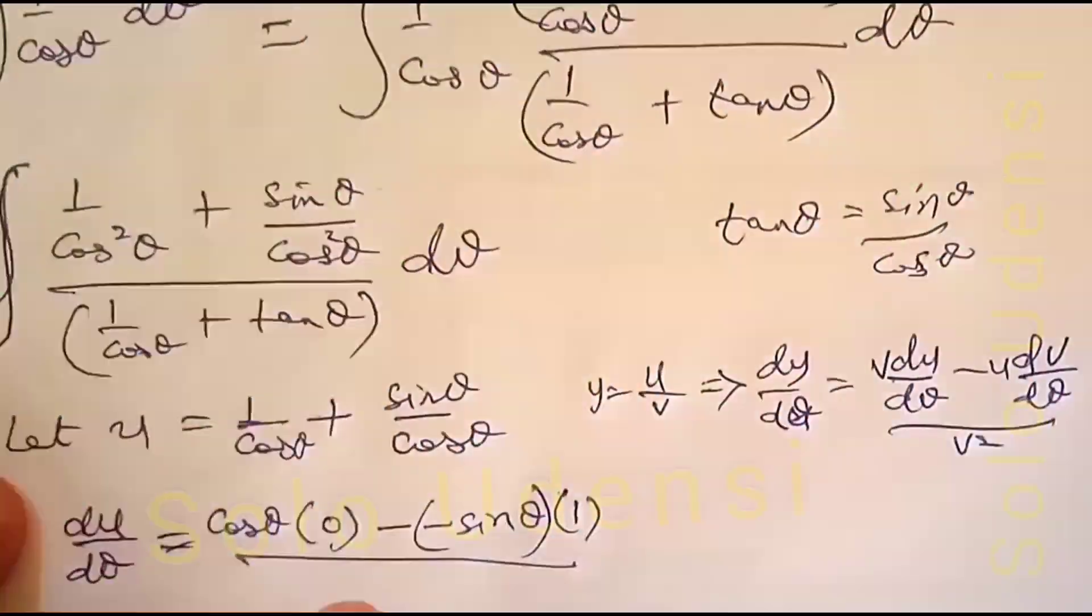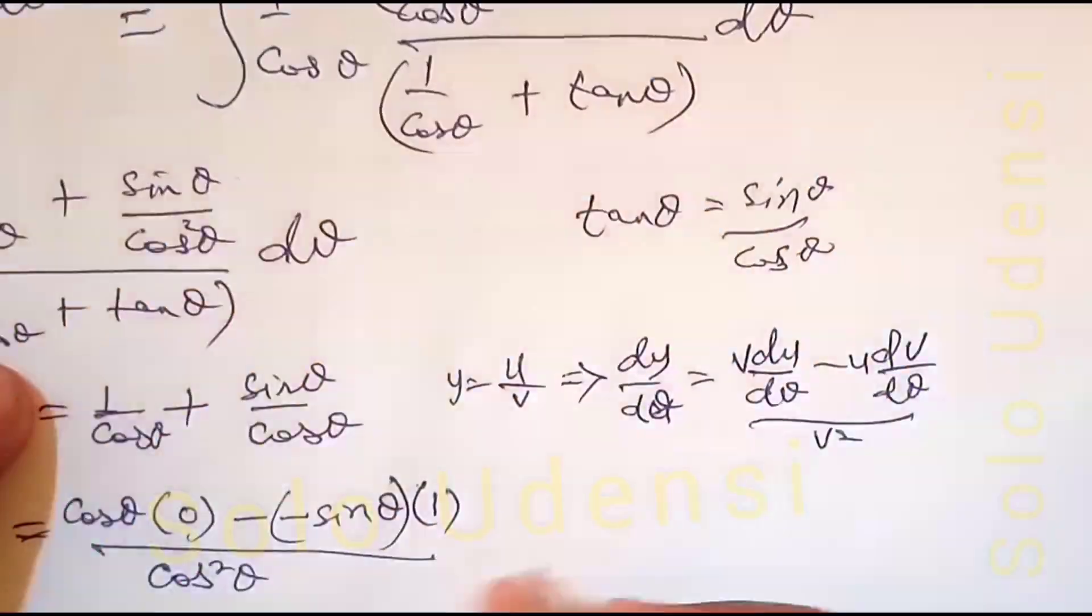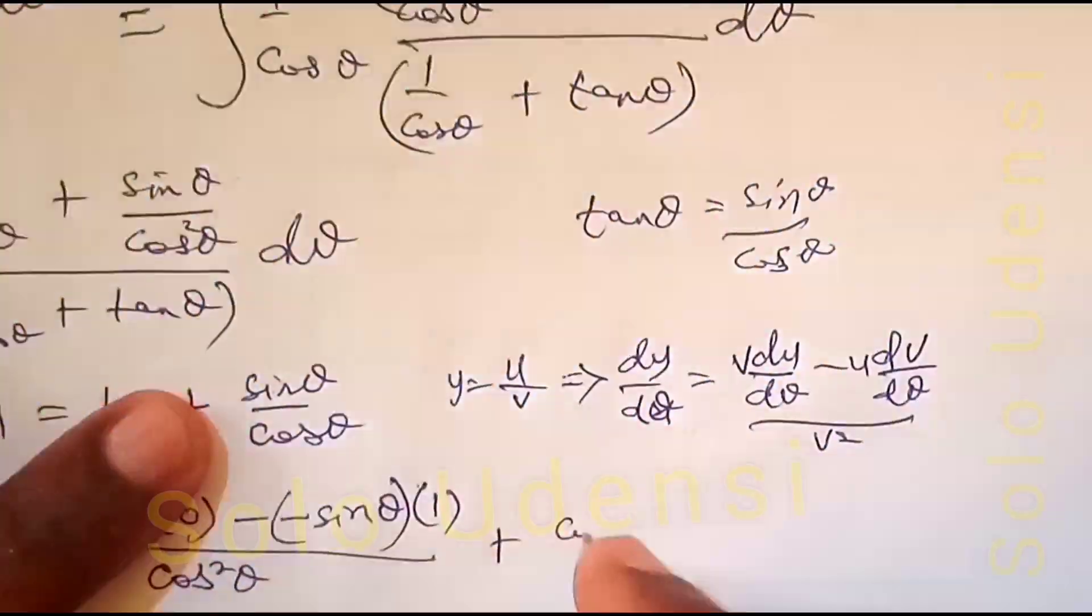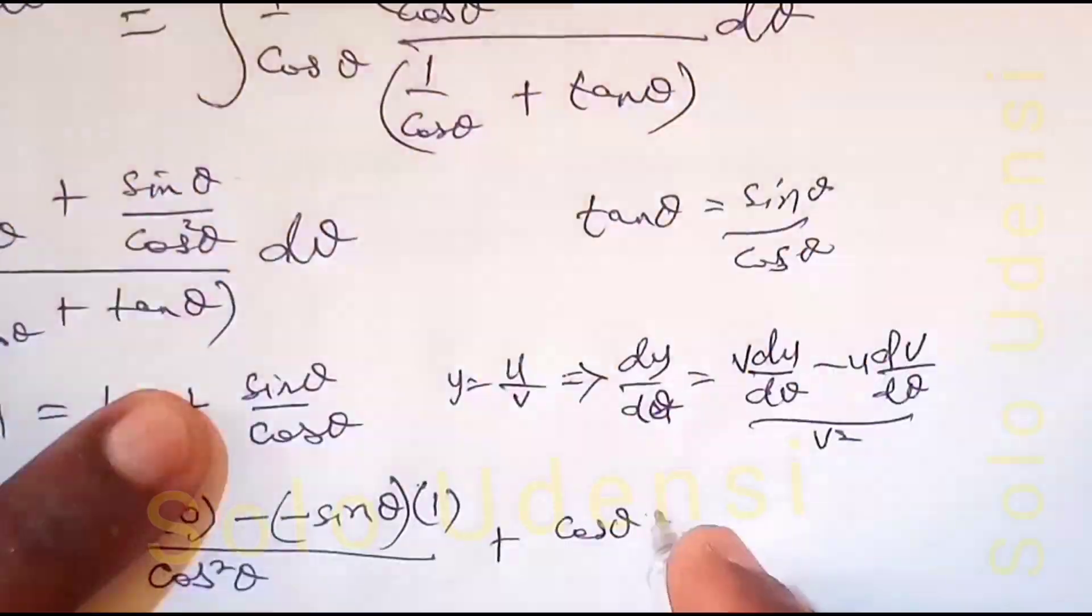Over v squared, which is cos squared theta. So v is cos theta, and du/dθ is another cos theta.